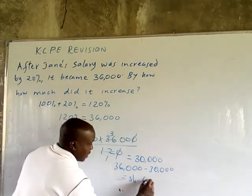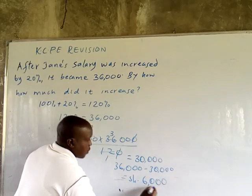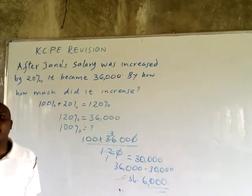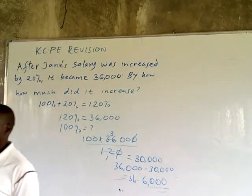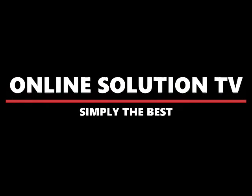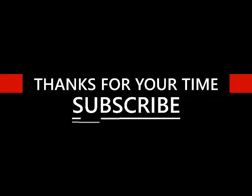Therefore, the salary increased by 6,000. The salary was increased by 6,000 shillings.